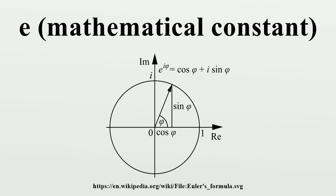Meaning that it is not a solution of any non-constant polynomial equation with rational coefficients. It was the first number to be proved transcendental without having been specifically constructed for this purpose. The proof was given by Charles Hermite in 1873.